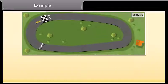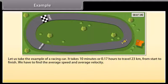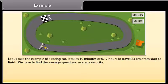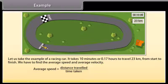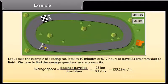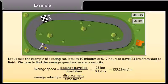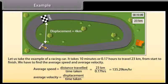Example: A racing car takes 10 minutes (or 0.17 hours) to travel 23 kilometers from start to finish. We have to find the average speed and average velocity. Average speed = distance travelled / time taken = 23 km / 0.17 hours = 135.29 km/h. Similarly, average velocity = displacement / time taken. We can see in the picture that displacement is 4 kilometers. Therefore, average velocity = 4 km / 0.17 hours = 23.53 km/h.